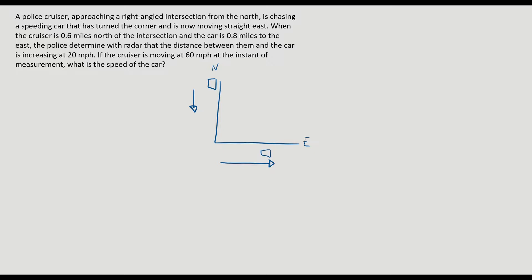When the cruiser is 0.6 miles north of the intersection, so that gives me a length, 0.6 from here to here. He noticed that the car is 0.8 miles to the east. The distance from the intersection to the car is 0.8.